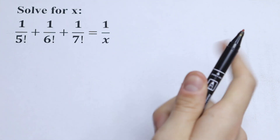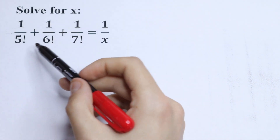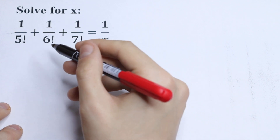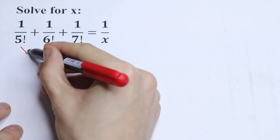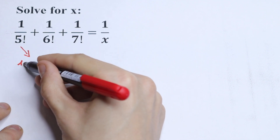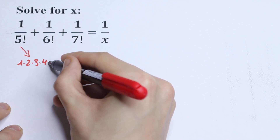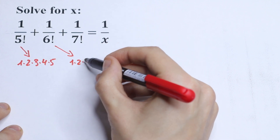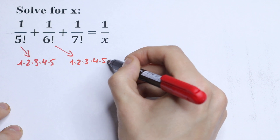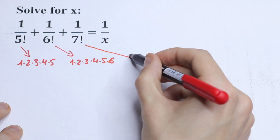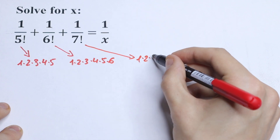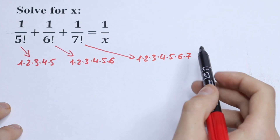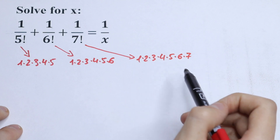On the first side, this equation is real hard, because we have factorials — 6 factorial and 7 factorial are huge numbers — so let's try to simplify this. First of all, we need to know that 5 factorial is a product from 1 to 5, 6 factorial is a product from 1 to 6, and 7 factorial is a product from 1 to 7. So as you can see, the common denominator will be 7 factorial.